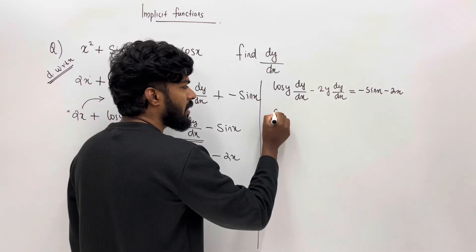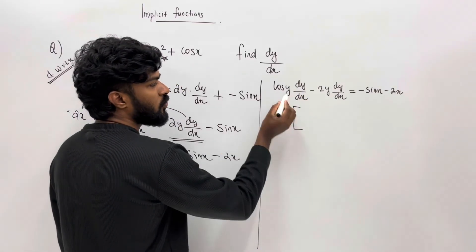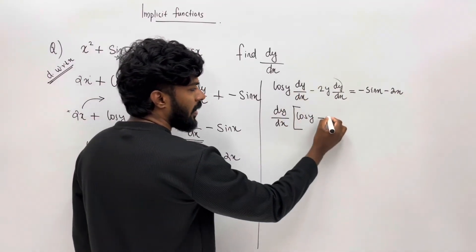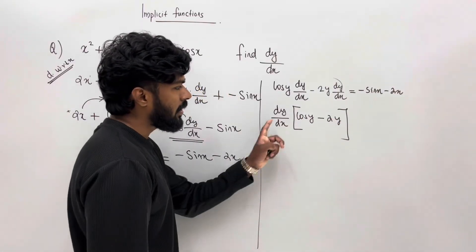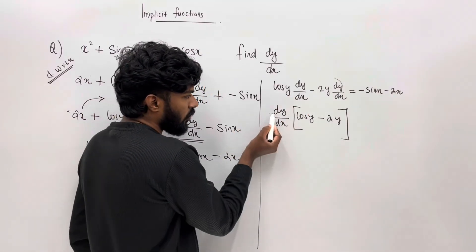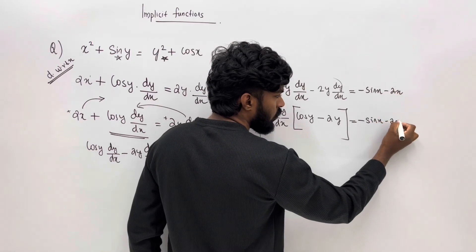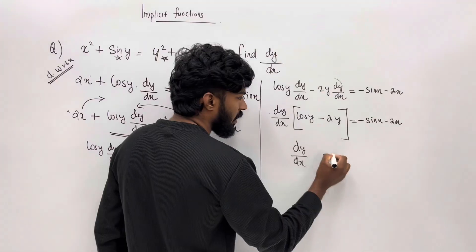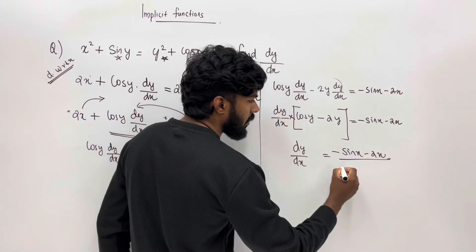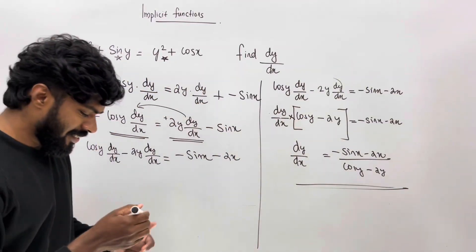So dy/dx times (cos y minus 2y) equals minus sin x minus 2x. You can factor out dy/dx. Then dy/dx equals (minus sin x minus 2x) divided by (cos y minus 2y). It's implicit functions.